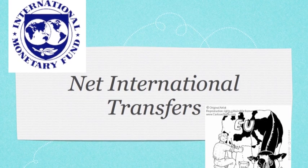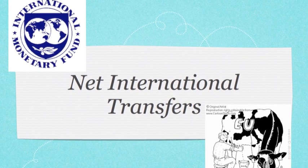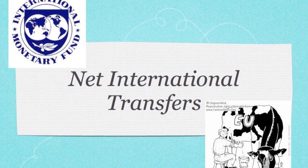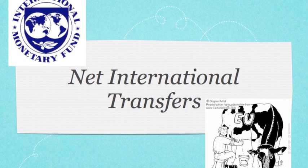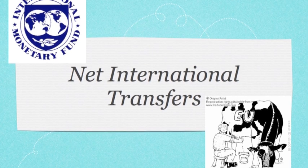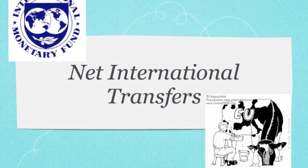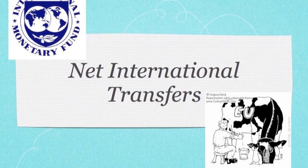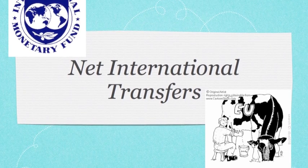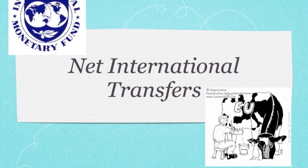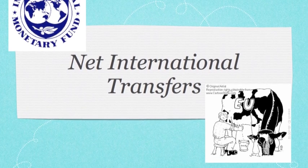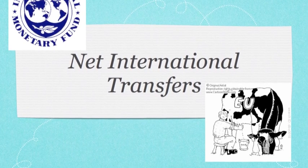The last component of the current account is net international transfers — money transfers between countries. For example, we pay fees to the IMF and EU for being part of them, and we might pay aid and disaster relief; these are imports because money is going out. Then we might have exports such as the EU giving subsidies to the UK, or if we have a disaster, another country giving us disaster relief.